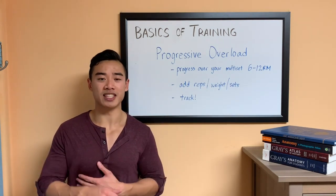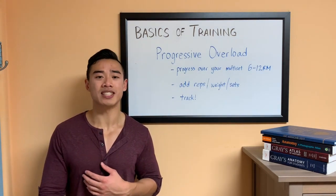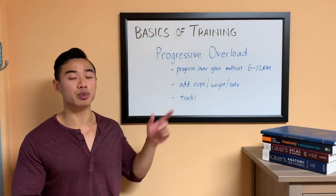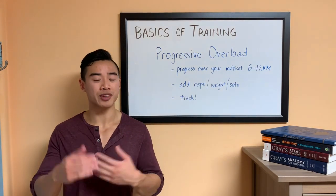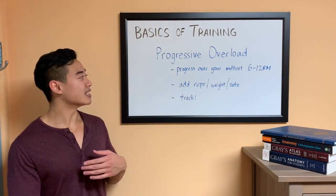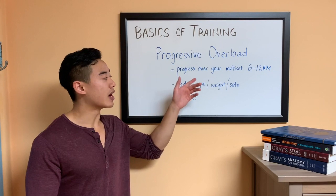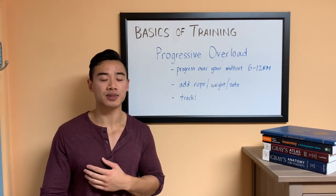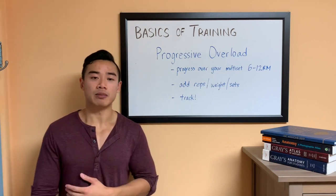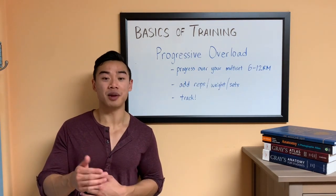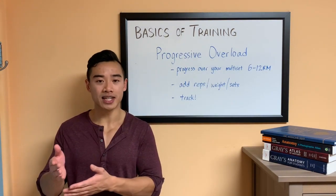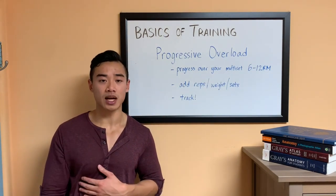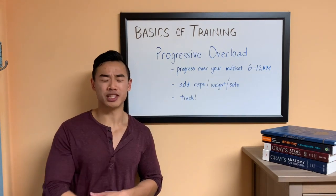In bodybuilding, I think that the best way to see that you are progressing in terms of growing muscle is to track your ability to progressively overload in the hypertrophy rep range. What that means is we should be aiming to progress over your multi-set 6 to 12 rep max. Basically, over time, you should be able to lift more weight over the 6 to 12 rep range for multiple sets in an exercise.